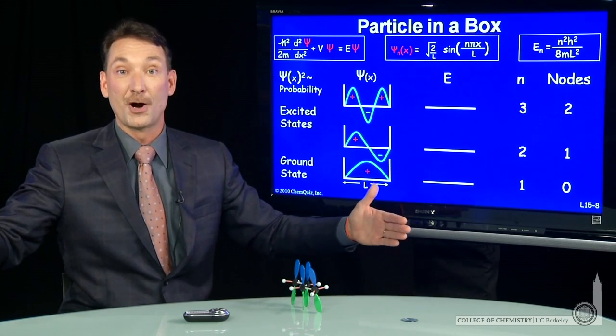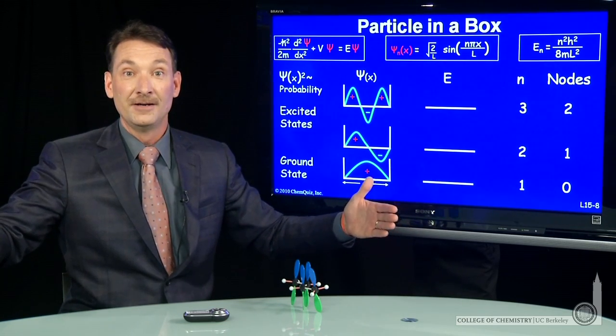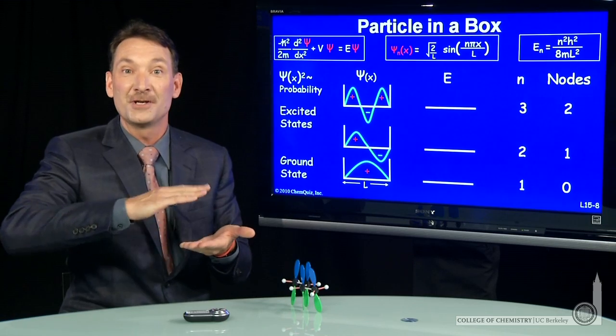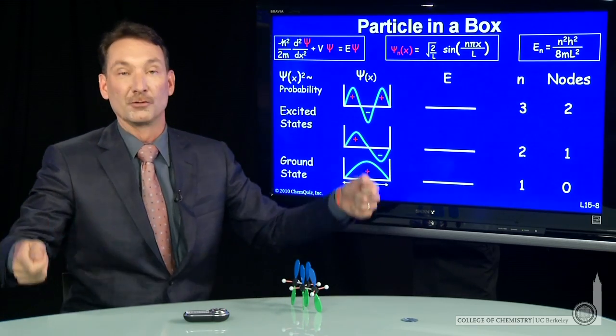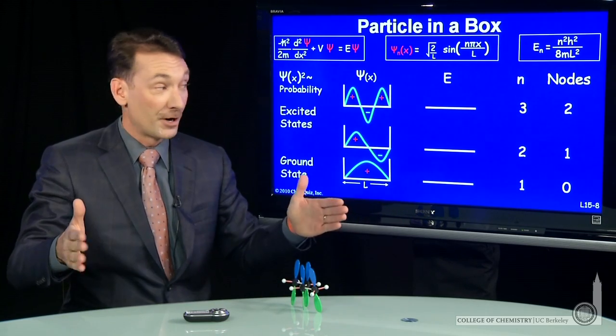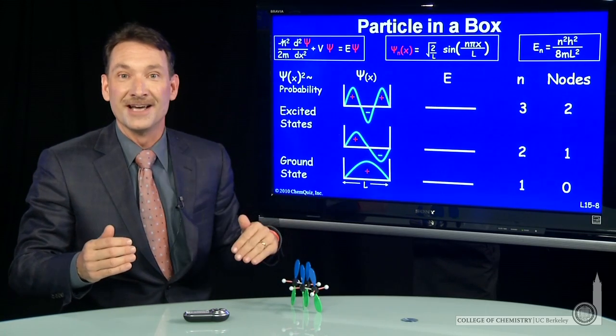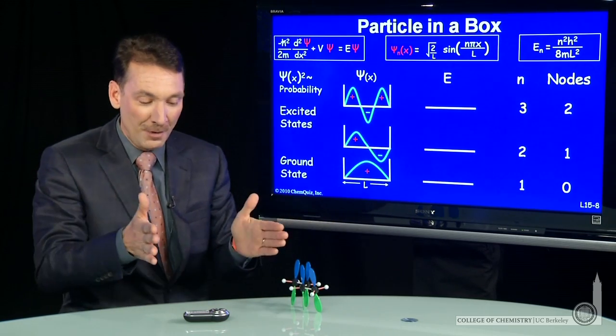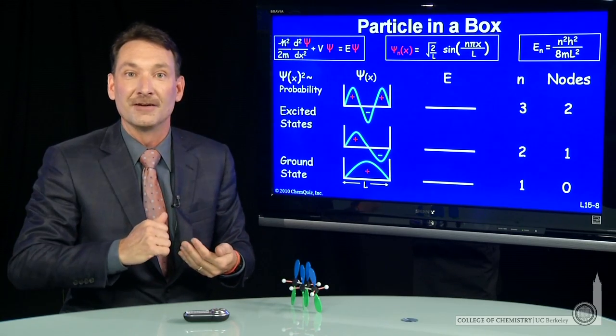In a very large box or big particles, you'd have continuous energy levels. You wouldn't have quantized velocities for a marble rolling around in a box. It can go at any velocity. A quantum mechanical particle has quantized energies. So small boxes, I have spacing between my energy levels.